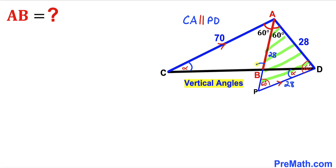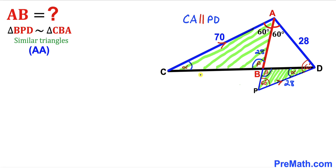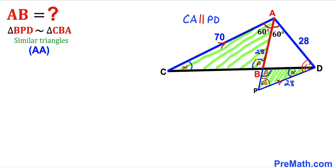Since these two lines are parallel, angle PDB is congruent to angle ACB — both are alternate interior angles. If we call this angle alpha, then angle PDB is alpha as well. This angle is congruent to this other angle since they are vertical angles — if we call this angle beta, then this angle is beta as well. Therefore triangle PDB and the bigger triangle CBA are similar triangles by the Angle-Angle similarity theorem, since alpha equals alpha, beta equals beta, and both share a 60-degree angle.